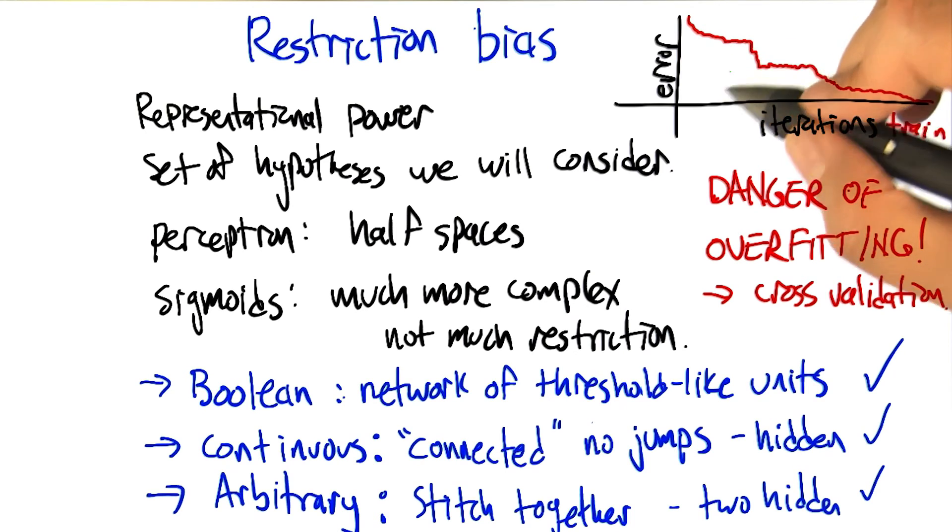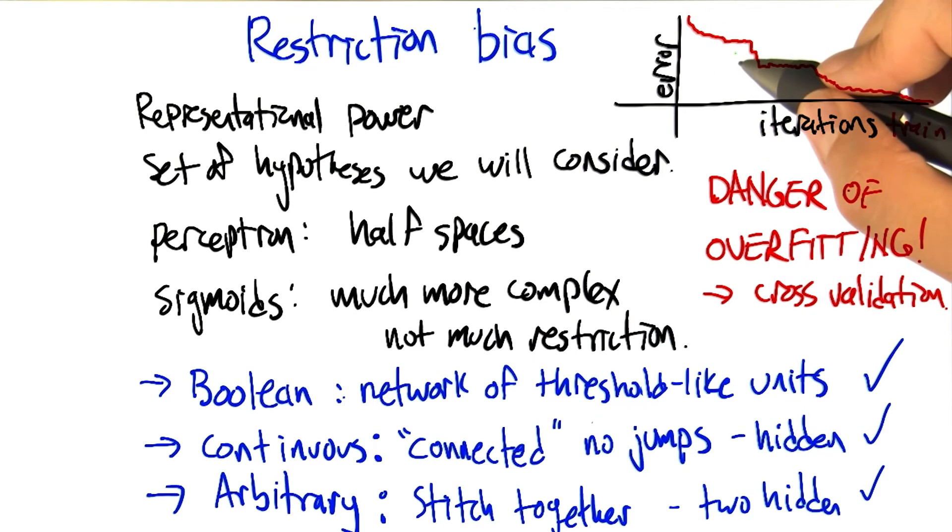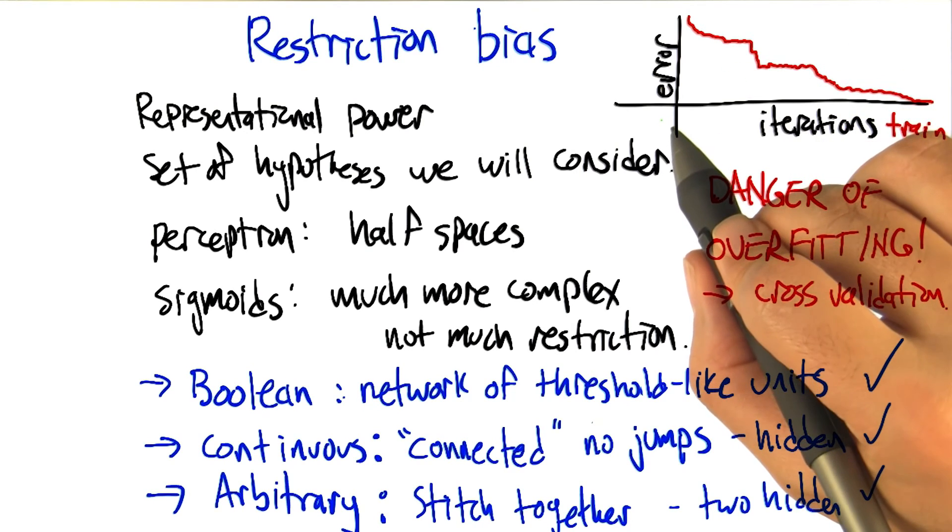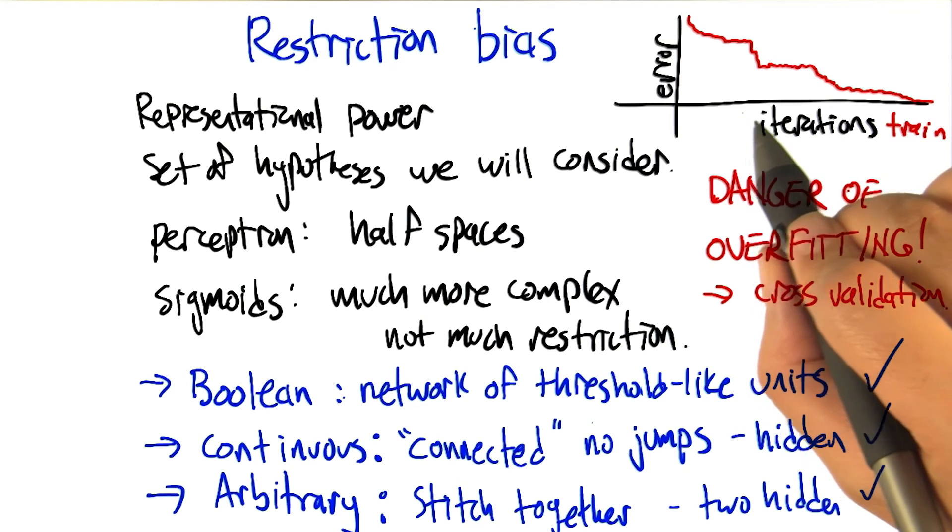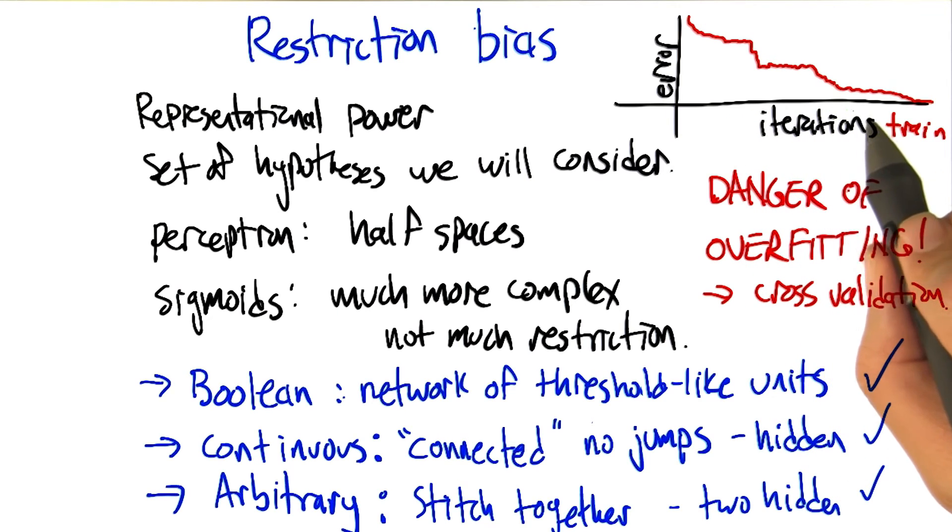In regression, you solve the regression problem, and again, that may have overfit. What's interesting about neural network training is it's this iterative process that you started out running, and as it's running, the errors going down and down and down.